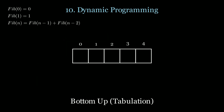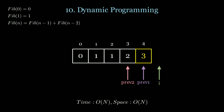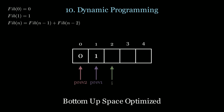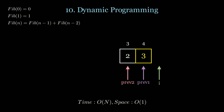Instead of top-down, we can use a bottom-up approach, which uses iteration with an array to store previous values. We store base cases 0 and 1, then use pointers to calculate the next element, arriving at the result. Time is O(N), space is O(N). However, bottom-up is generally preferred because we can optimize space — we only need the last two numbers, so we use two variables, prev2 and prev1, achieving O(N) time and O(1) space.